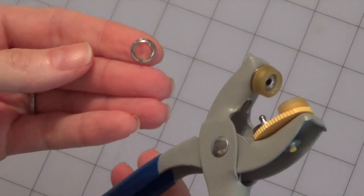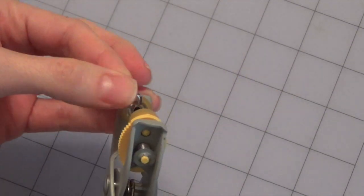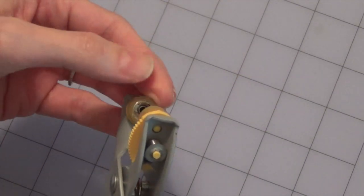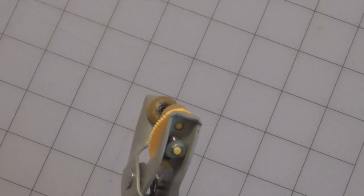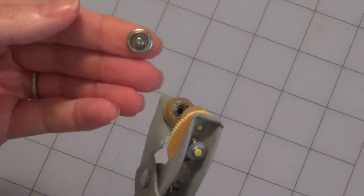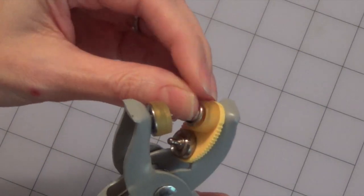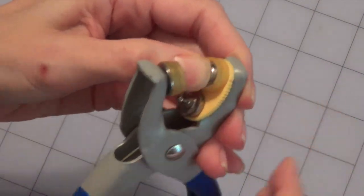We're going to start with the prong side, and that goes in the bottom part of the jaw. The bottom is the one that doesn't have the yellow plastic thing. So the top on the yellow side, we're going to put the male component.